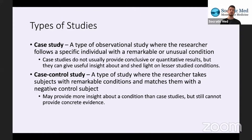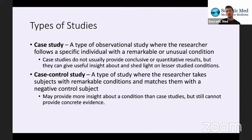We're going to go into the different types of studies. They talk a lot about studies like this on the psych and social section, and you might encounter passages regarding them. A case study is a type of observational study where the researcher follows a specific individual with a remarkable or unusual condition. You're following one individual through time, just taking their account of a disease or some condition. It's not really an experiment trying to establish cause and effect or find statistical significance — it's just observational, gathering information from observations. It's great to spark questions and guide future research, but it doesn't definitively or conclusively provide results.